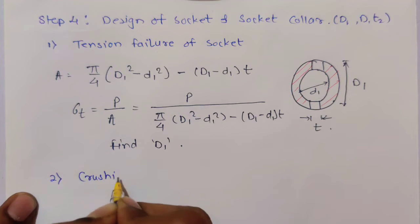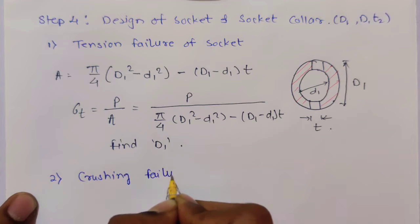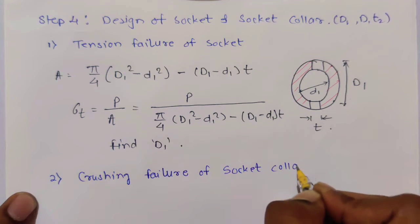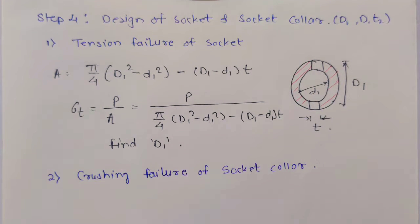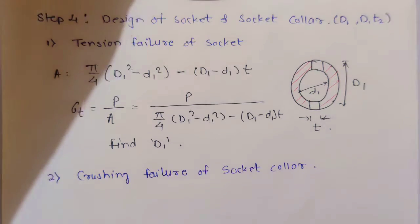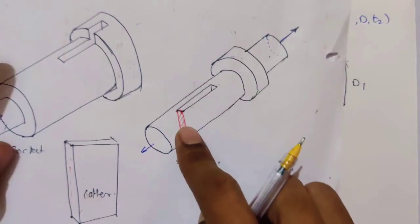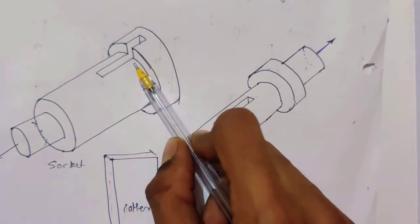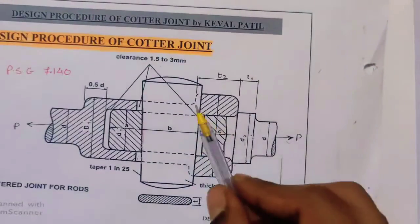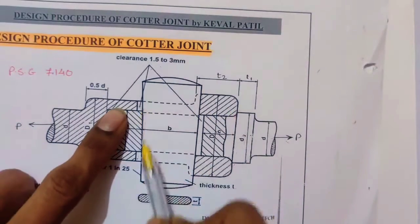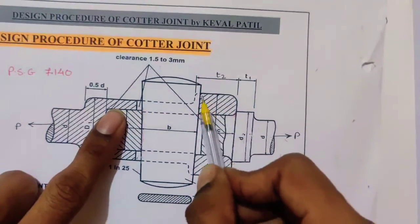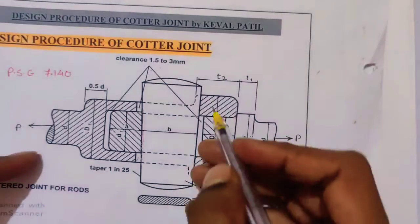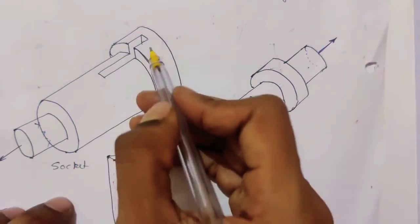Now it's crushing and shear. Second step is crushing failure of socket collar. We have already seen the crushing failure of spigot. Now which side will you get the crushing failure in the socket? For socket, the clearance is at one side and the cotter is pressing at the other side, so you will get the crushing failure on that side.